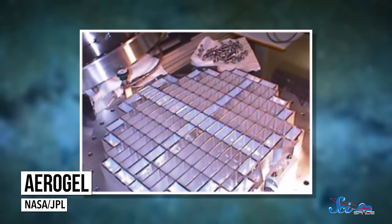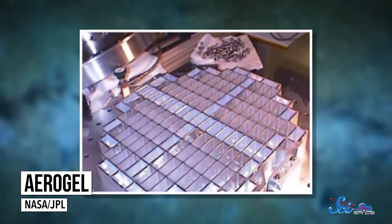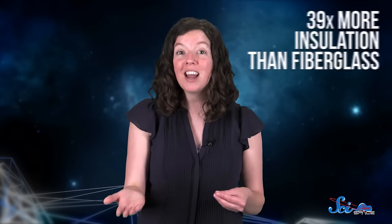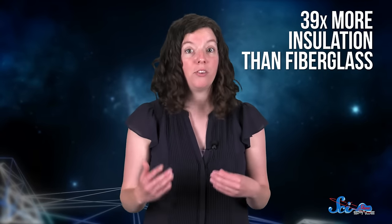So the scientists made a special collector that looked kind of like a big, spacey tennis racket. It was round and flat, and had a grid of cells that were full of this cool material called aerogel. Aerogel is a thousand times less dense than glass, and certain kinds provide 39 times more insulation than the very best fiberglass.